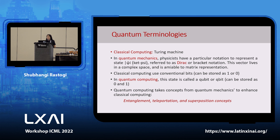I'll discuss a few quantum technologies. In a classical computer we use a Turing machine and transistors, so the state can be either zero or one. In quantum mechanics, the state is called a qubit, and it can be zero and one at the same time. Quantum computing takes concepts from quantum mechanics — entanglement, teleportation, superposition — to enhance classical computing.